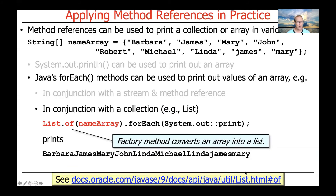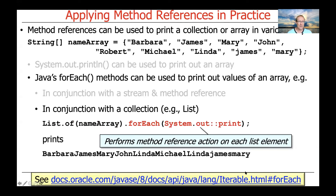It also turns out there's a foreach method available on other types of collections, like a list. We can use list.of to convert the name array into a list, and then use the foreach method that's part of list — it becomes part of list through collection, because collection implements the iterable interface. The long and short is that collections have a way to call foreach for every element, and once again we pass in System.out::print as a method reference, which performs the designated action — printing — on each element in the list.